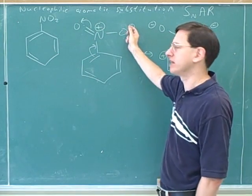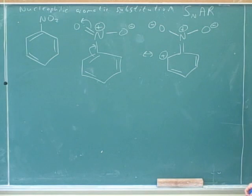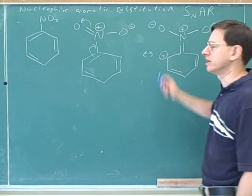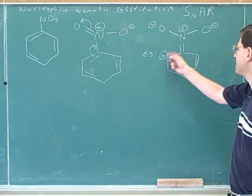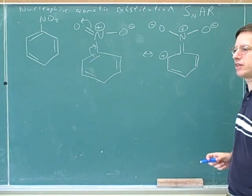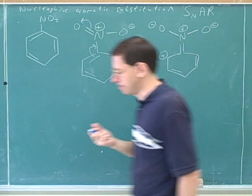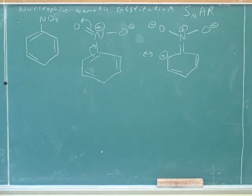We ended up with a lot of charges here. So we're not saying that this is the major resonance structure, but it's a contributing resonance structure. And that puts a positive charge here. Let's draw all the other resonance structures for this molecule. Let's use electron pushing arrows to show all the other resonance structures for where the positive charge can be in the benzene ring.